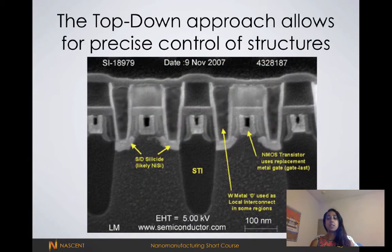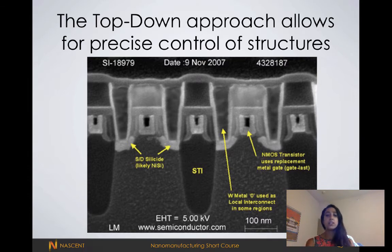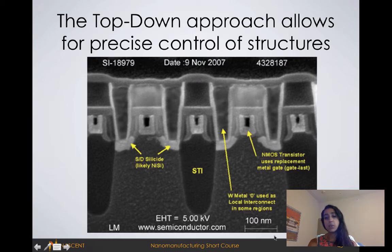This is an example of an NMOS transistor. We're showing this here so that you can see how complex these devices are and also how small. This is an SEM image and the different colors show different materials. You can also see from this length scale that it's very small.